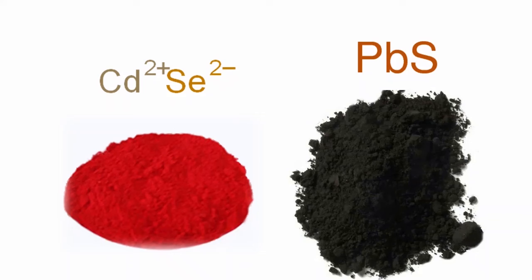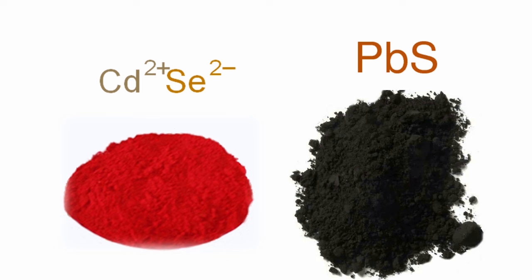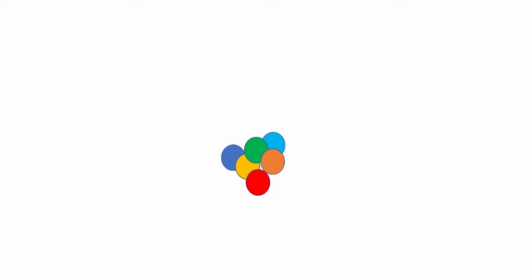These quantum dots are often made from materials like cadmium, selenide, lead sulfide or other semiconductor compounds. It's a bit like choosing different colors of lego bricks to build something.